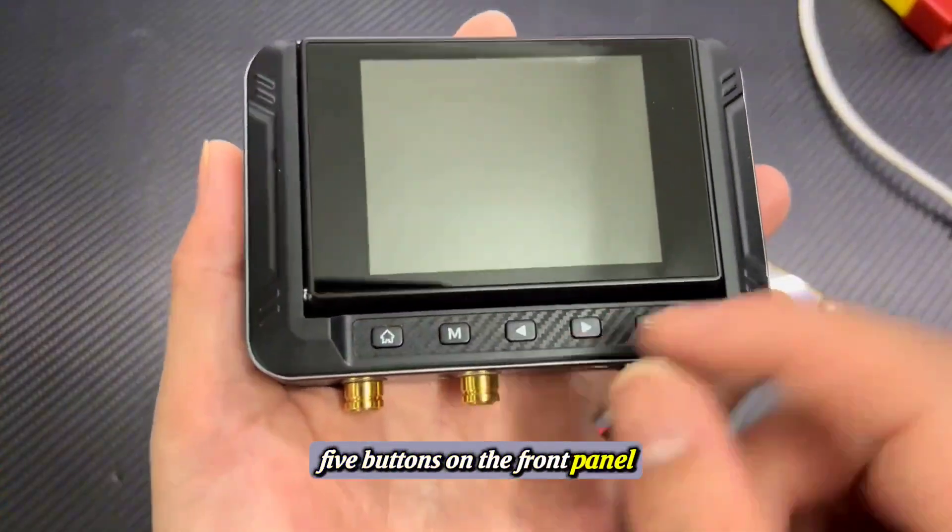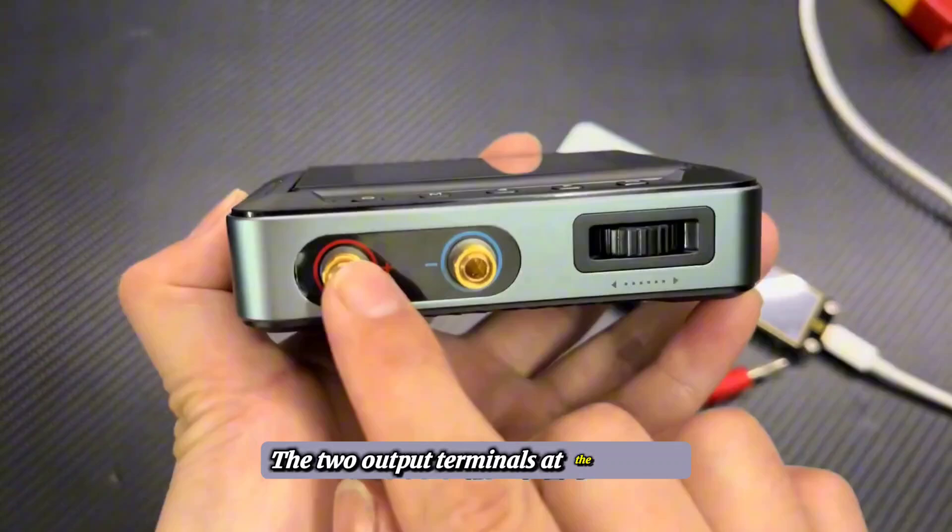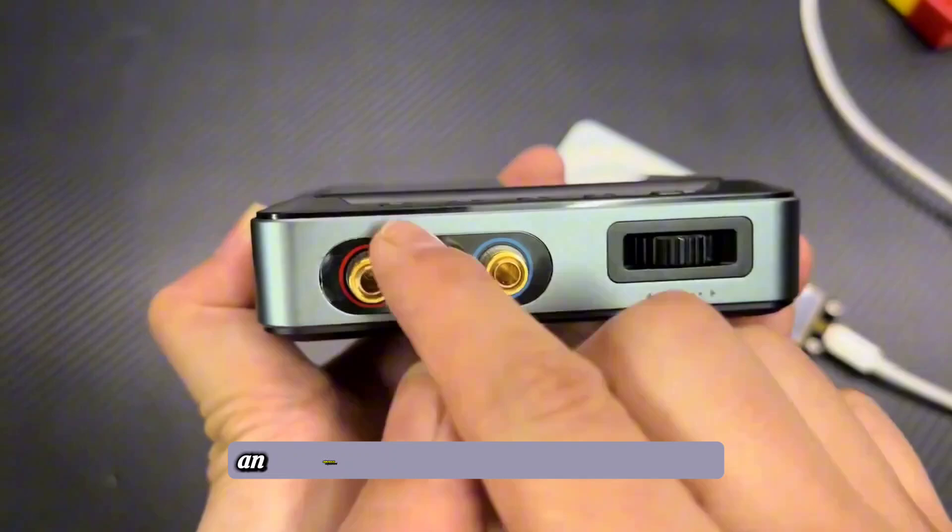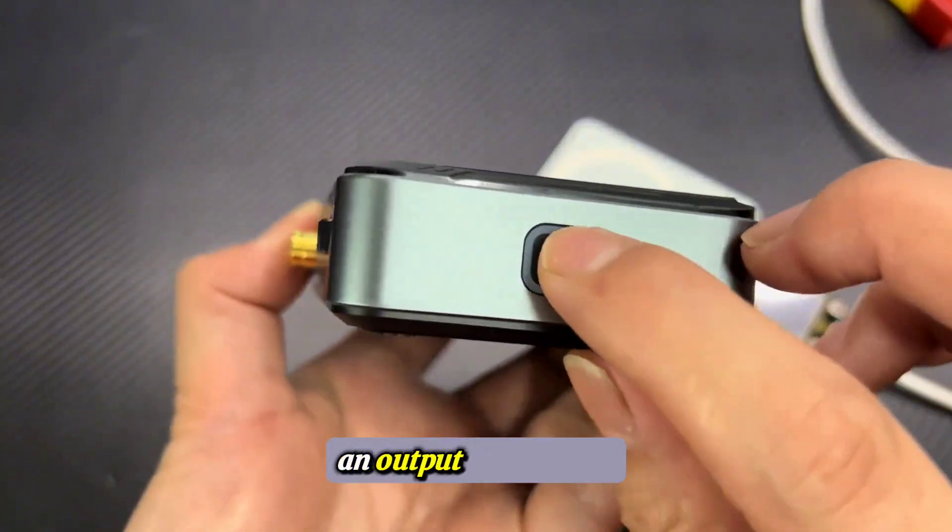Five buttons on the front panel. A carbon fiber sticker here. An adjustment knob. A dynamic indicator light. An output start button.